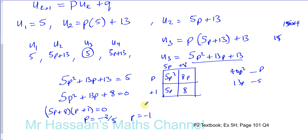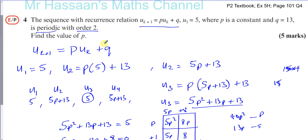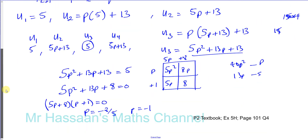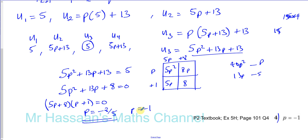The question doesn't state that P is an integer, so both P = −1 and P = −8/5 appear to be valid answers. However, the answer given at the back of the book is only P = −1. There's nothing in the wording to prevent −8/5 from also being valid, which is a bit strange.